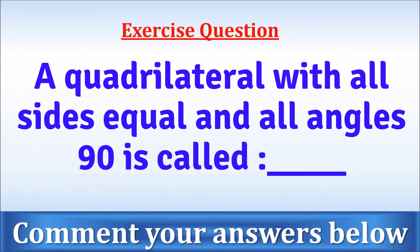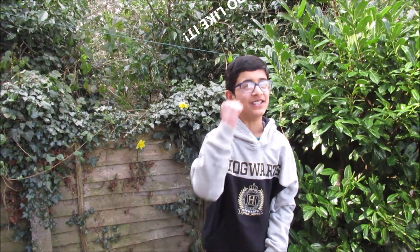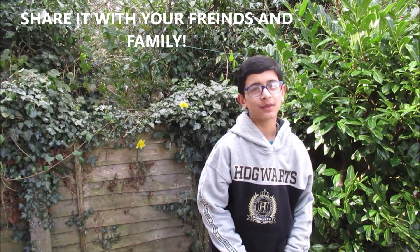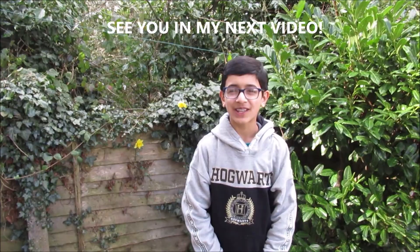Here is the exercise question of the day: A quadrilateral with all sides equal and all angles 90 degrees is called what? Please find and comment your answers below. If you enjoyed this video, please like it, subscribe to my channel, hit the notification bell, and share it with your friends and family. Thanks for watching and keep watching. Bye, see you in my next video.